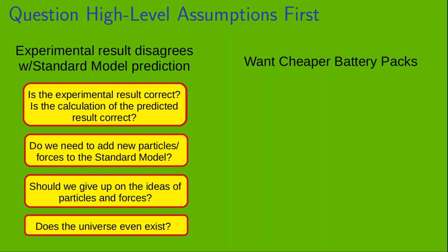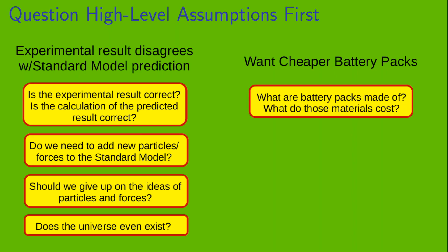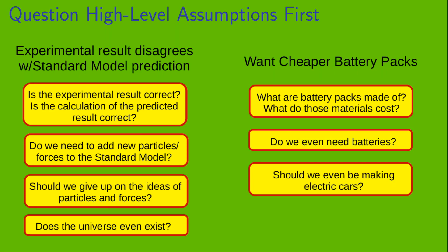Now let's look at Elon Musk's battery pack example. As we saw, he asked questions like, what are battery packs made of? And, what do those materials cost? It makes sense that he would start with high-level questions like that, instead of questioning low-level fundamental assumptions by asking questions like, do we even need batteries? Should we even be making electric cars? And, should I become a musician? So, the idea is that we should start with the high-level assumptions, and then slowly work our way down to the low-level assumptions.